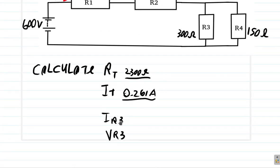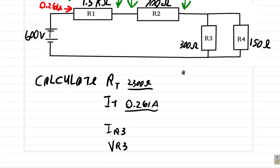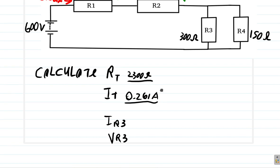What we want now is the current flowing through R3 and the voltage drop across R3. So pause the video and do the calculation for me now. Okay, what did you get for it? Let's see what happens here.